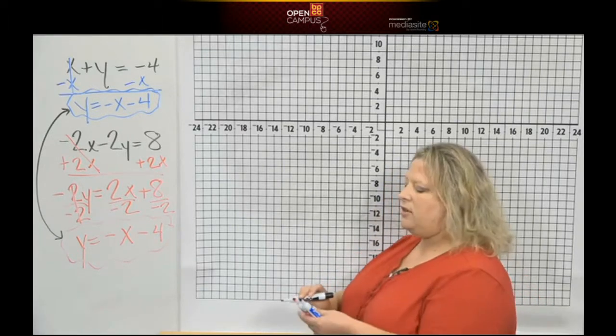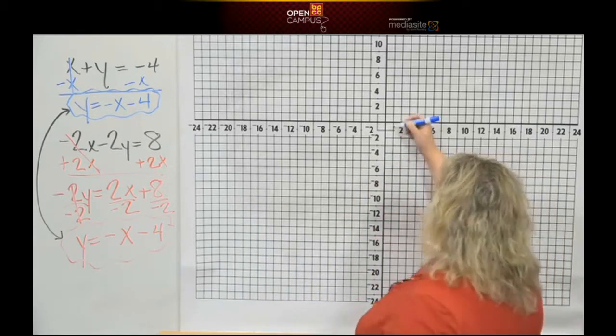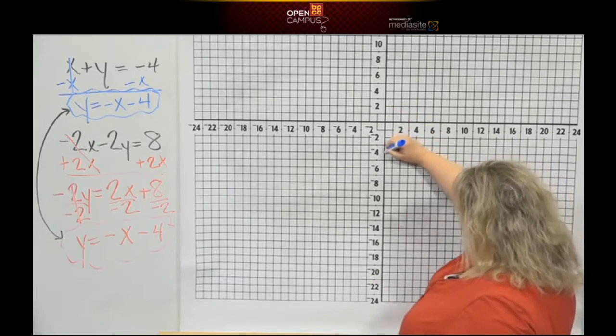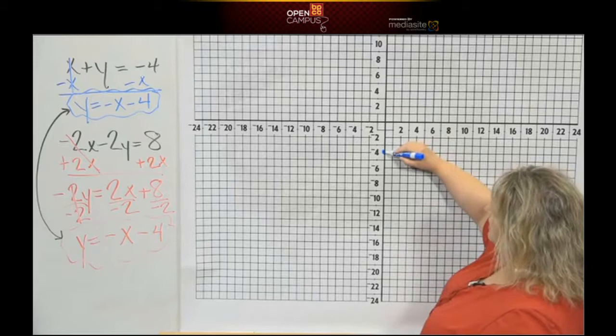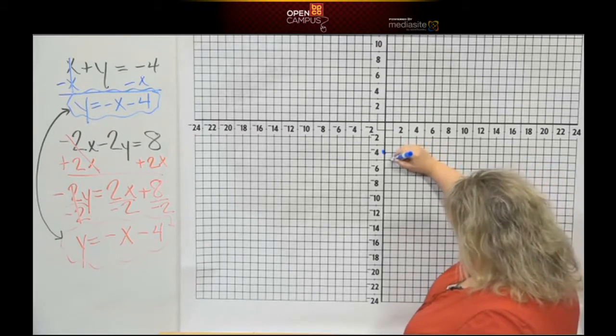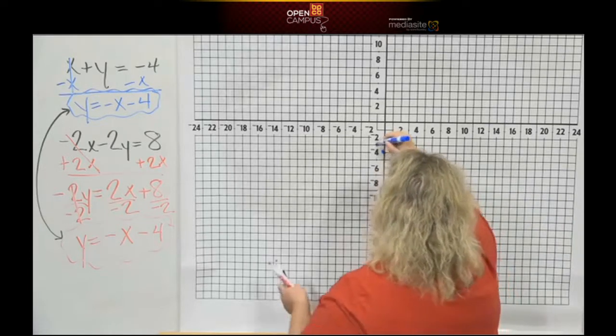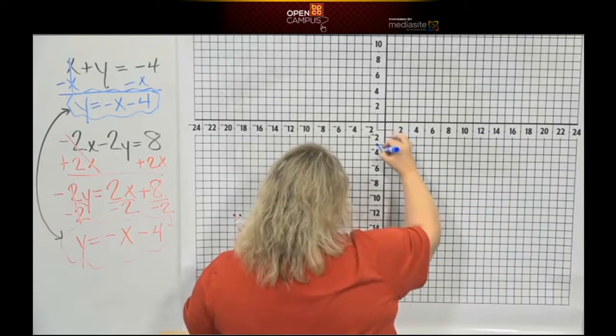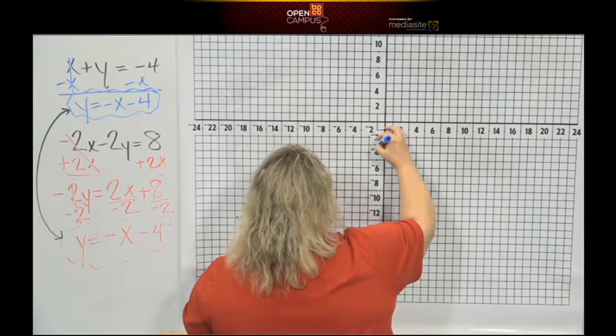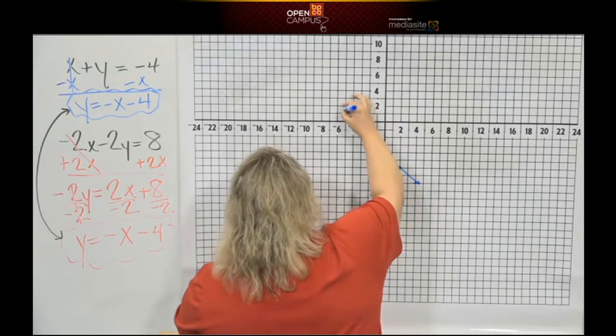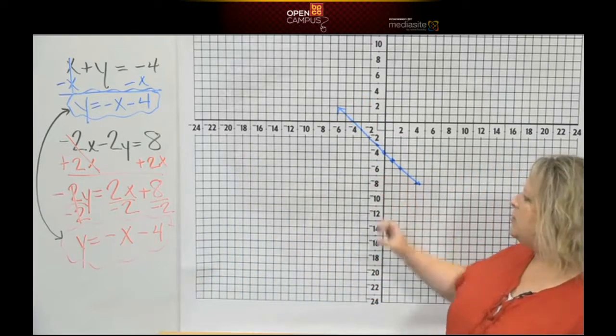So when I go to graph this, if I graph the top one first, I go to negative 4 and stick my point right here. My slope is negative 1, so that means count down 1 and over 1. And you know, again, you could do this infinite number of times, because it's a line. And if you want to make it super straight, get a ruler. Okay. There's one line.